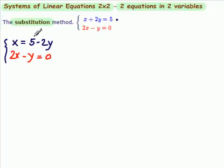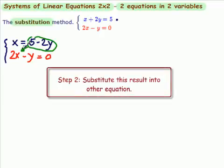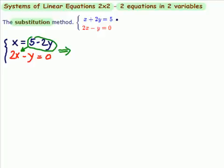Now we have 5 minus 2y equals x and we're going to substitute that into the second equation. Hence the name substitution method. So what do we get?